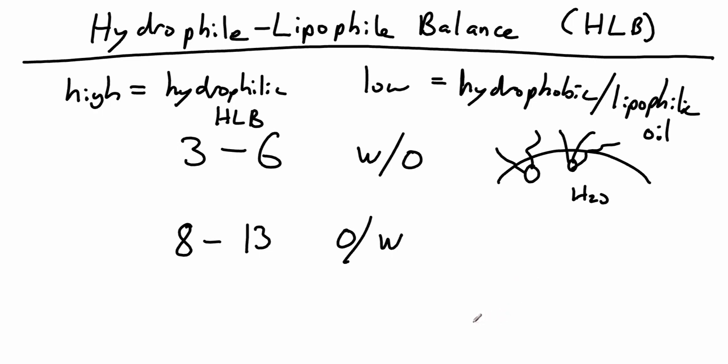If we had a droplet that was an oil in water emulsion, then you want to have the bigger part of the molecule on the outside. You can see the bigger part of the molecule is the hydrophilic part. So that means we expect it to have a high HLB number. Notice high goes with oil in water and low goes with water in oil.